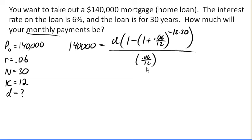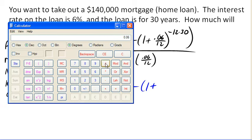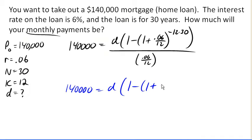And so like we have typically done, we're going to go ahead and sort of pre-evaluate some of these values. And so we could go ahead and say, let's see, 140,000 equals d times 1 minus 1 plus... So we got .06 divided by 12 is .005. So 0.005,